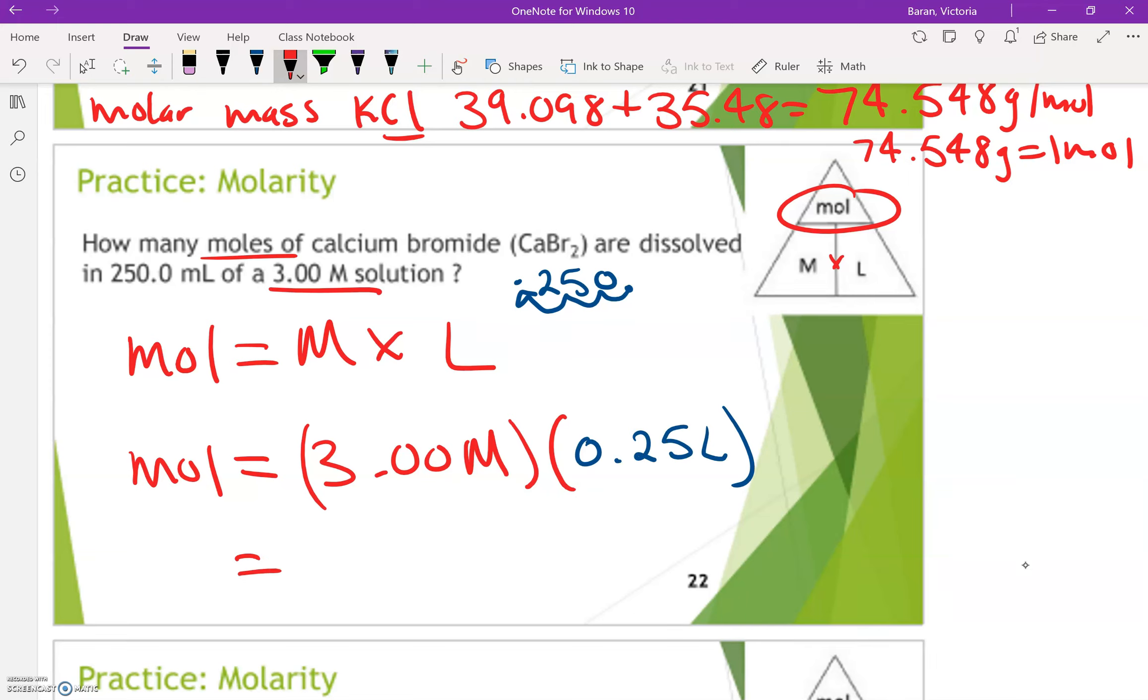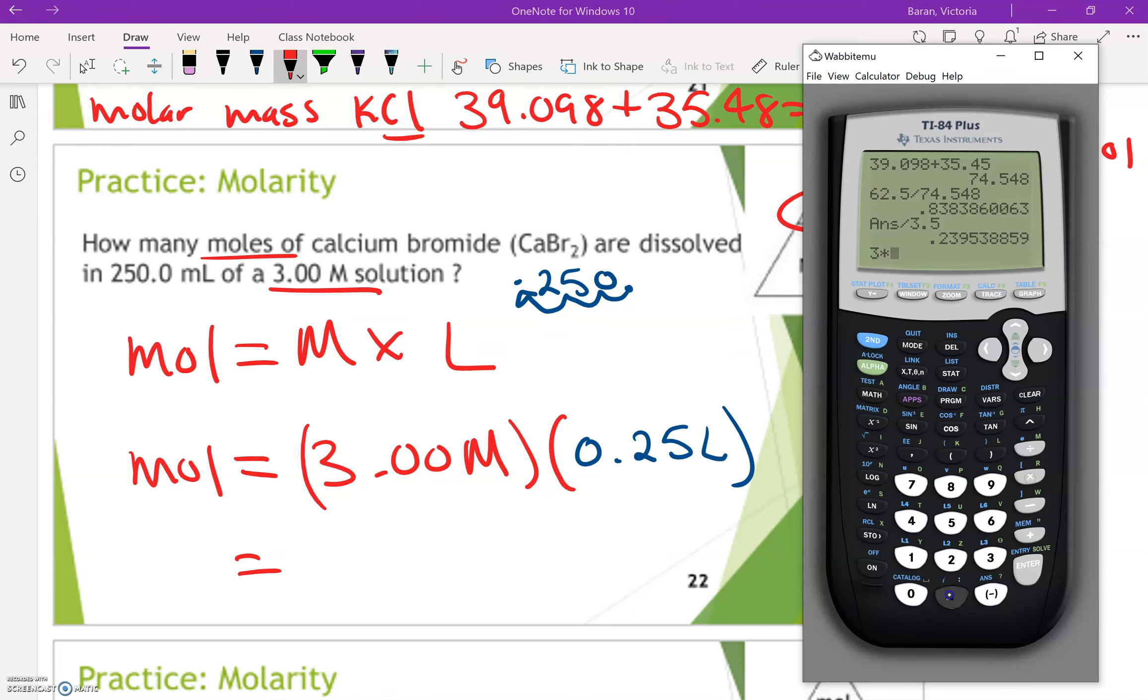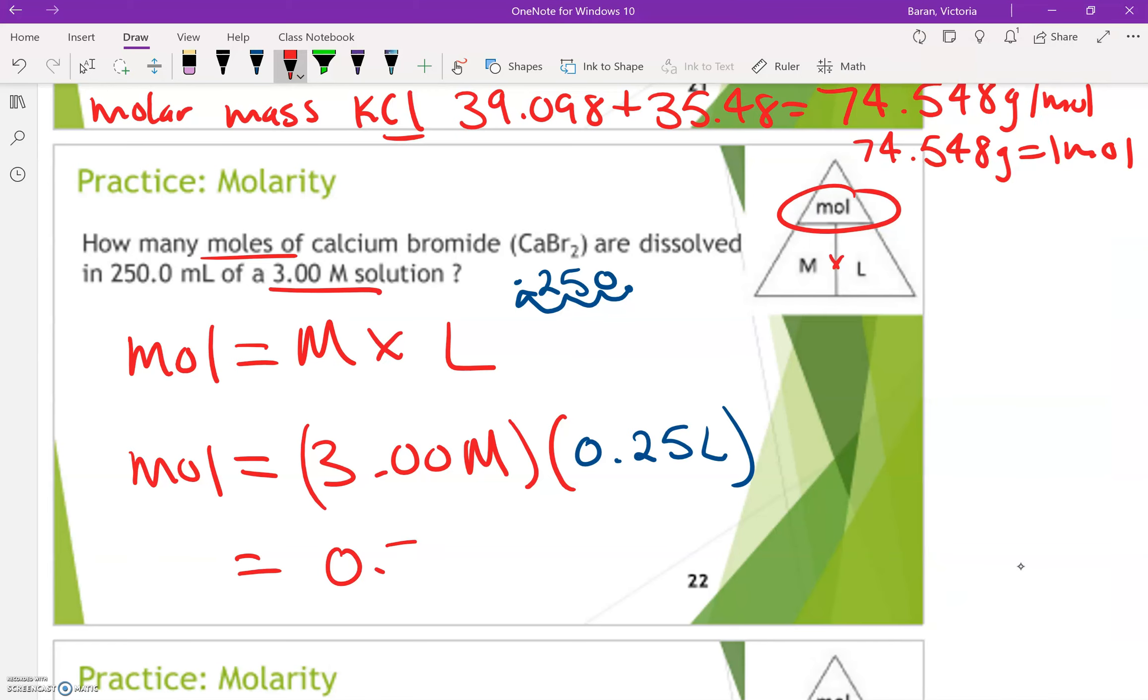If you're going from milliliters to liters, you're going to move three decimal places to the left. So now I'm just going to do that 3 times 0.25. So my molarity, which is big M times liters, which I converted from milliliters into liters, 0.75. And this is how many moles I have.